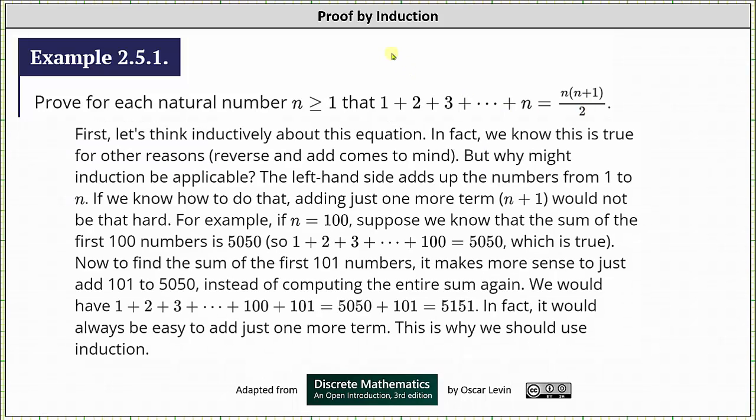First, let's think inductively about this question. In fact, we know this is true for other reasons. For example, we found the formula on the right by using the method of reverse and add when determining the sum of the arithmetic sequence 1 + 2 + 3, all the way out to n.